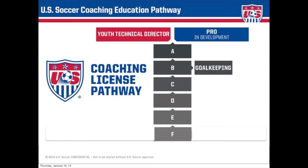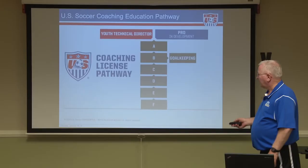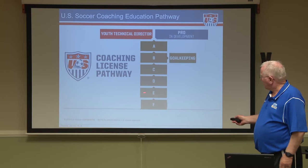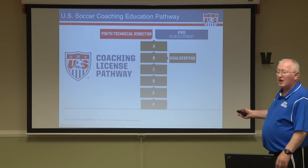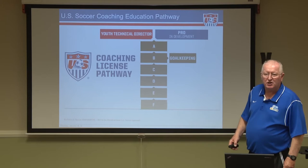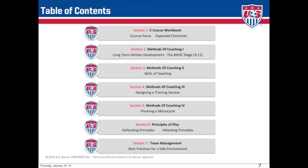Here is the educational pathway to be the most productive coach you can be in the United States. We are here at the E license, and the D is the next step. In order to go to a national C, B, or A, one has to have the D license, which is the highest license in the state.